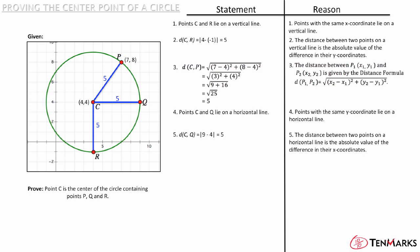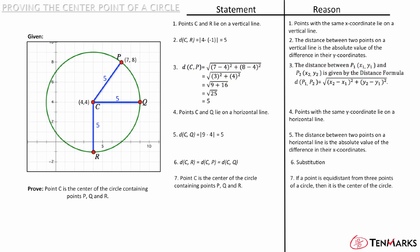Since the distance of the three line segments is equal, by substitution, you can say for certain that point C is the center of the circle containing points P, Q, and R, because if a point is equidistant from three points on a circle, then it is the center of the circle, and this completes the proof.